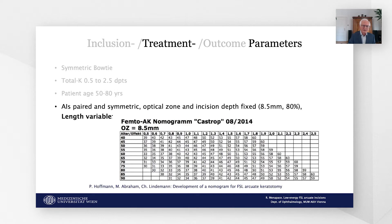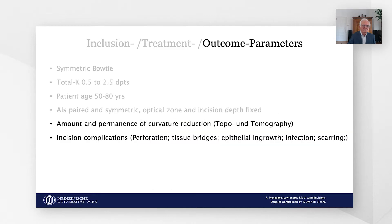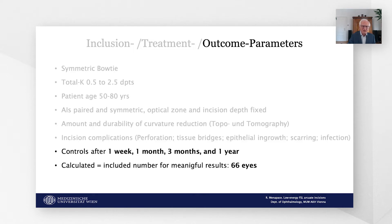Treatment parameters: the arcuate incisions were paired and symmetric with a fixed optical zone of 8.5 mm and a fixed incision depth of 80%. Incision length varied according to the CAST-DROP nomogram published by Hoffmann and co-workers in 2014. Outcome measures were the amount and permanence of corneal curvature reduction as measured by topography and tomography, and possible incision complications like perforation, tissue bridges, epithelial ingrowth, infection, or scarring. Follow-up examinations were scheduled at one week, one month, three months, and one year.